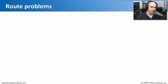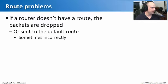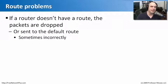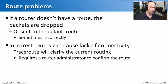Routing loops aren't the only kind of problems you'll run into with routers. One route problem is simply not having a route at all. A packet goes into a router, the router doesn't know what to do with it, and by default it drops the packet. Many routers have a default route configured — if the route isn't specifically listed, send it there. But sometimes those routes are configured incorrectly or send traffic into a black hole, and that traffic never reaches its destination, causing a lack of connectivity.